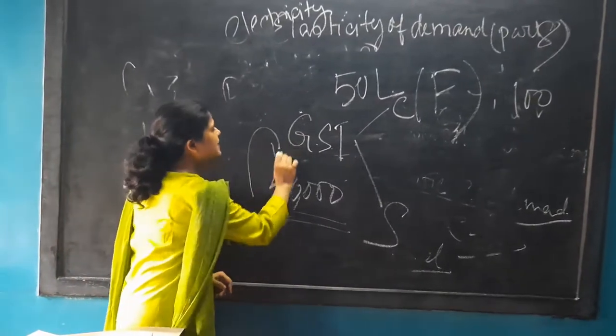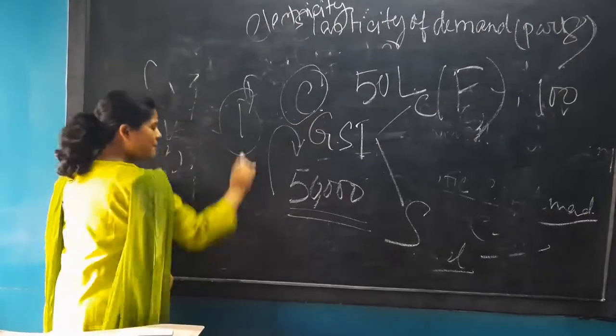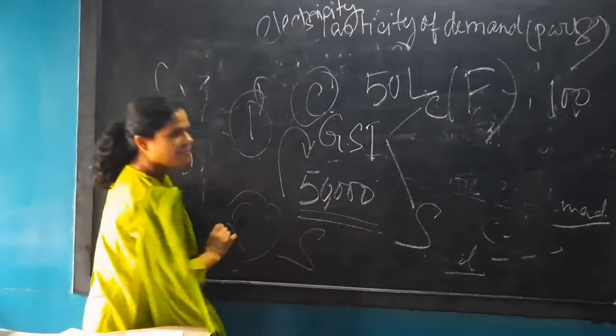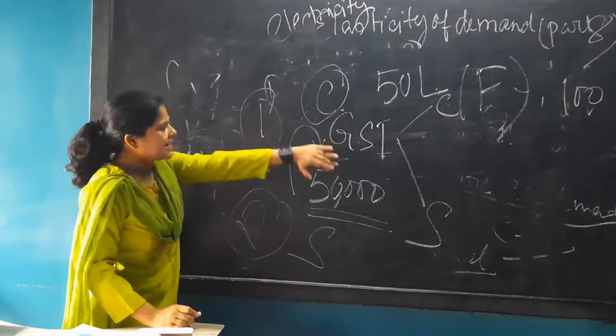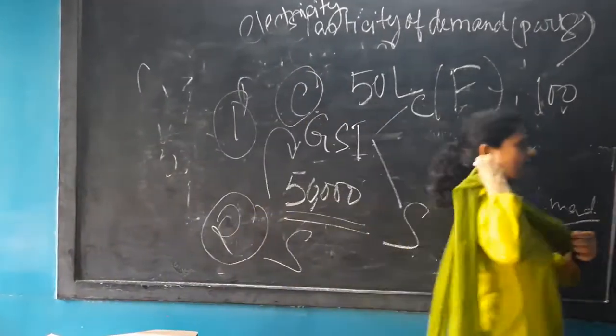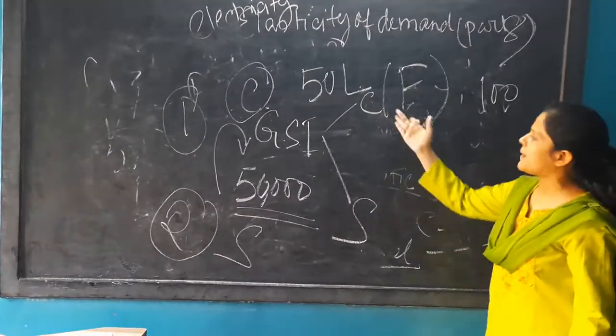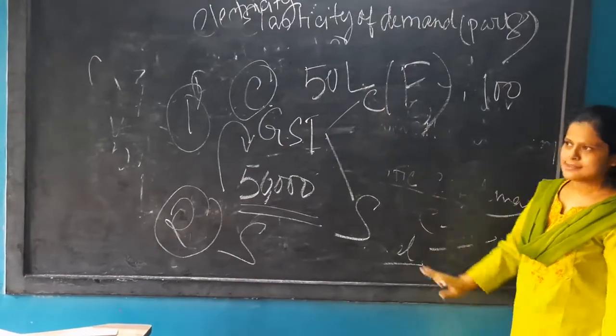So, here the GST has to be paid by the customer. Number two, again, the GST will be paid by the seller also. It is customer GST, which will be shared by state and central. Again, there is a seller GST, which will also be shared by central and the state.